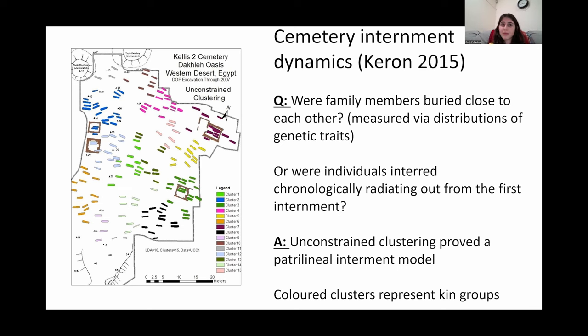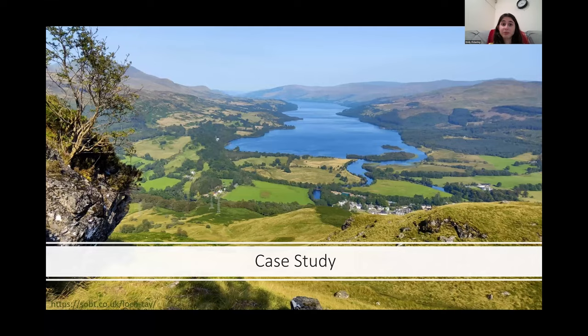Karen's other project tested whether family members were buried close to each other or if there was a simple chronological internment. He did that by using specific hereditary skeletal traits and actually found a patrilineal internment model with kin groups represented in different colours in the picture. So that's pretty cool.